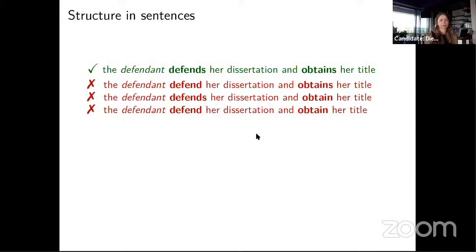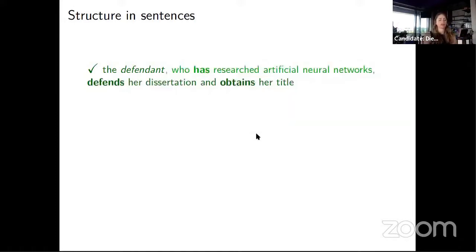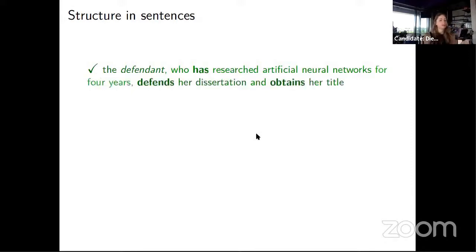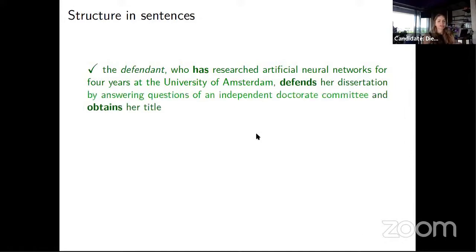Now I can even make this dependency longer by adding a bunch of relative clauses: 'the defendant who has researched artificial neural networks defends her dissertation and obtains her title.' Still there is this link, and we can make it even longer: 'for four years at the University of Amsterdam defends her dissertation by answering questions of an independent doctorate committee.' Still, sentences get longer and longer, and we can actually quite easily understand them.